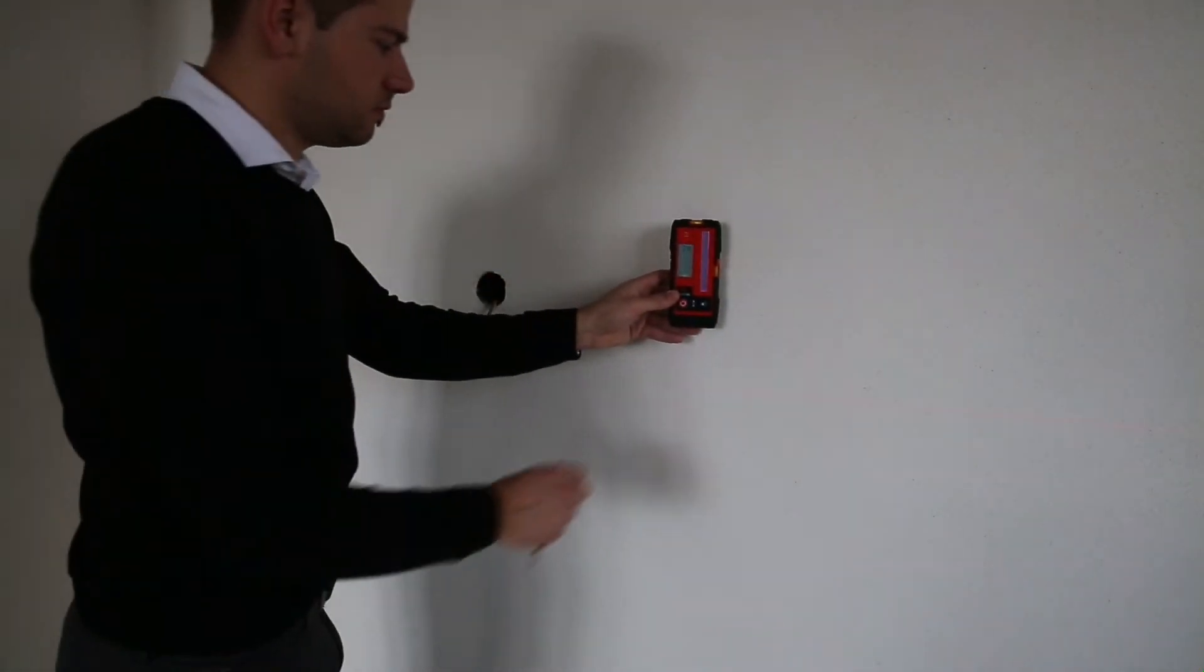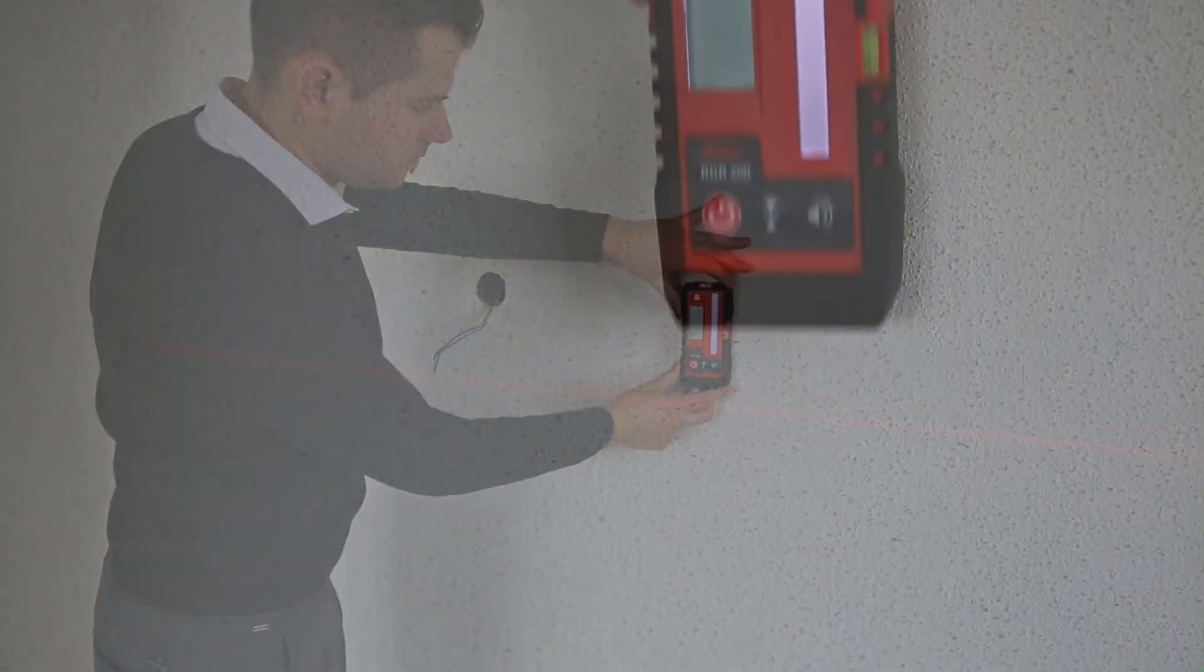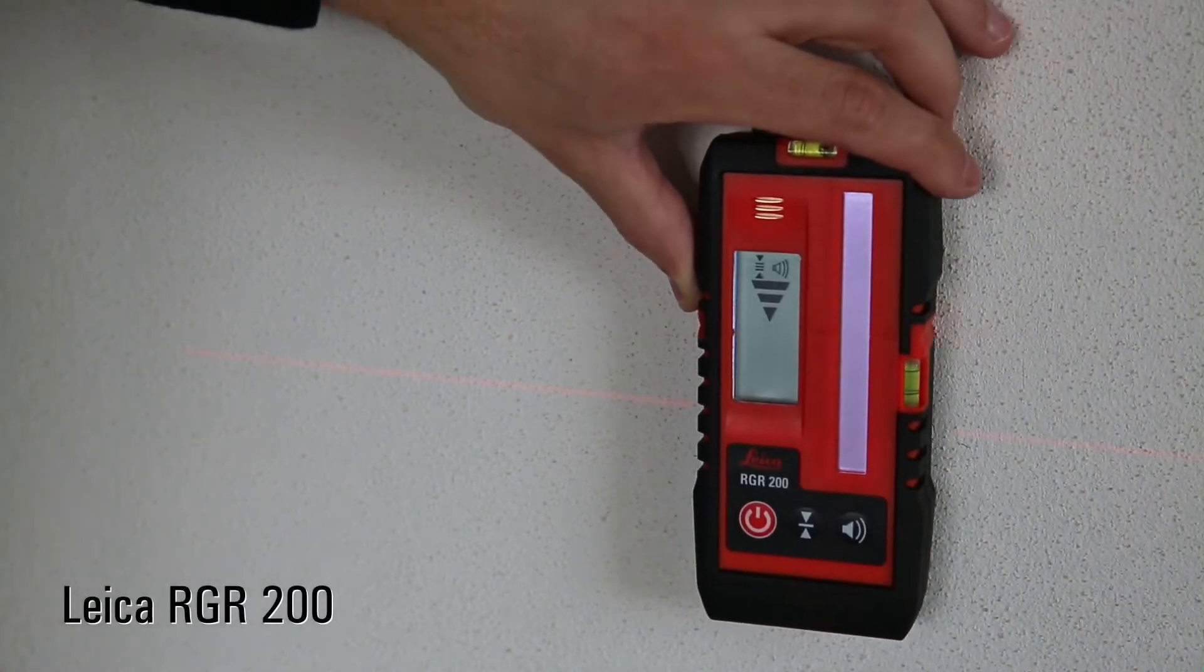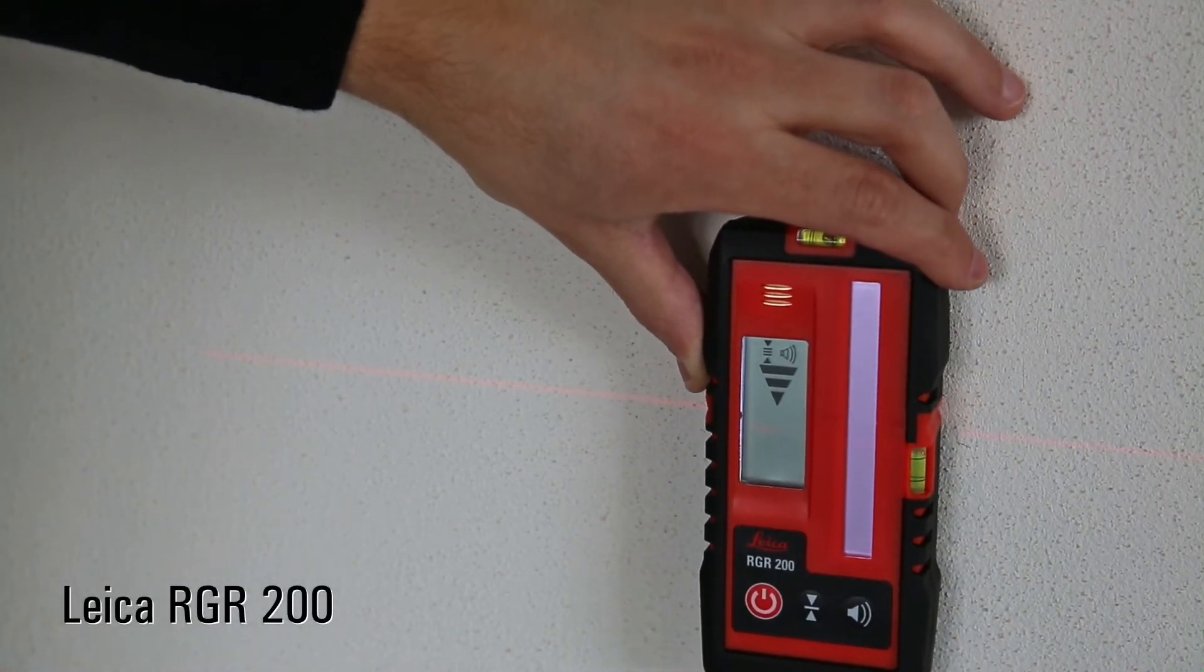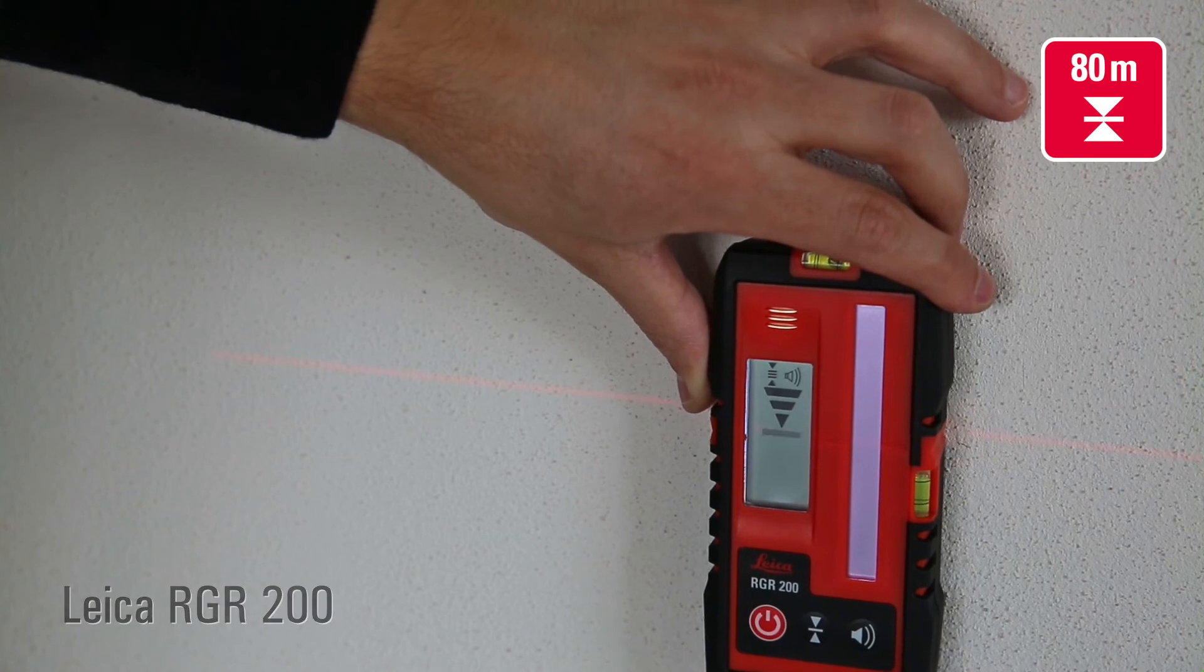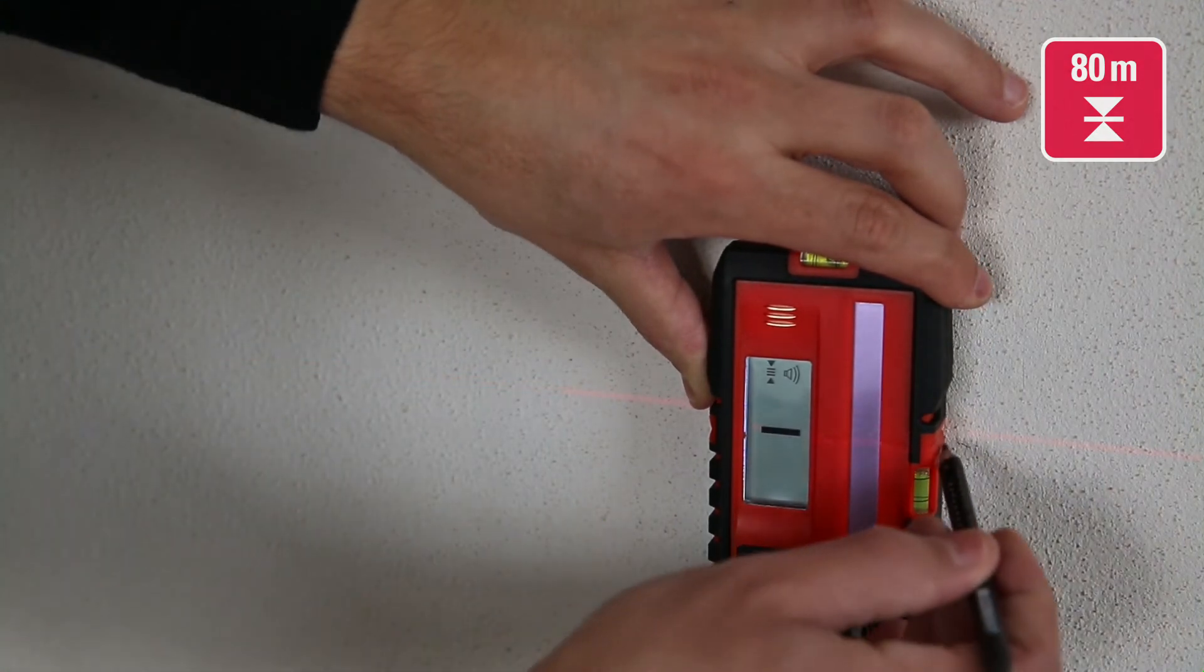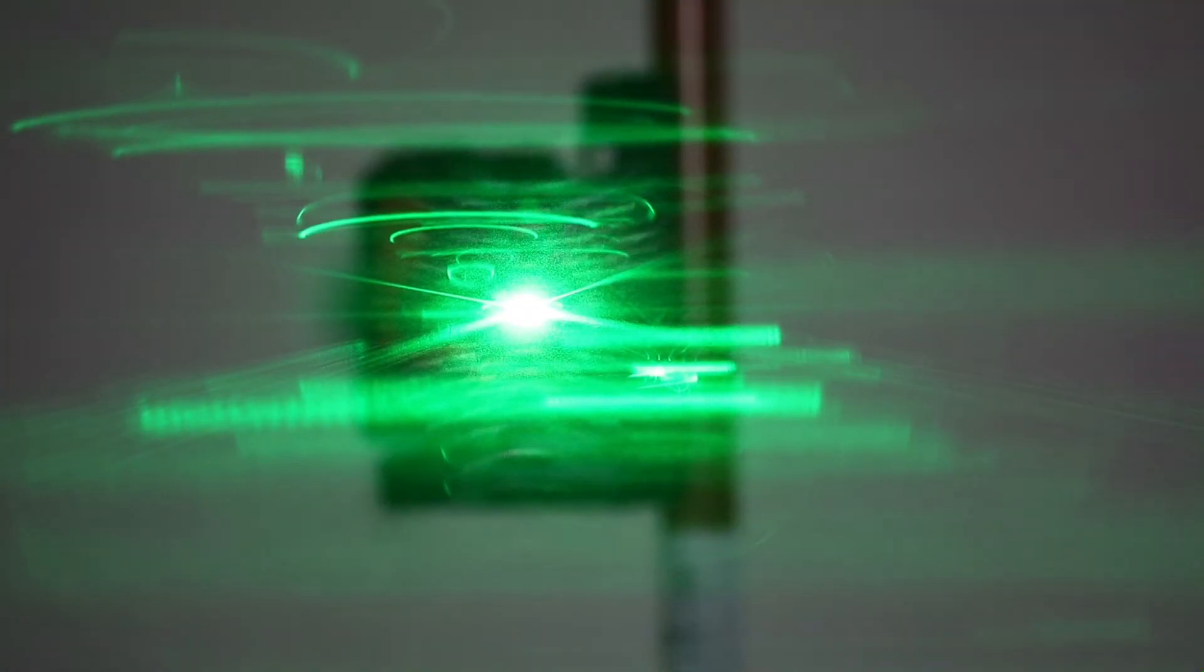For long-range applications or bright sunlight conditions we recommend the new RGR200 receiver. It works precisely up to 80 meters with red and green Lino line lasers.